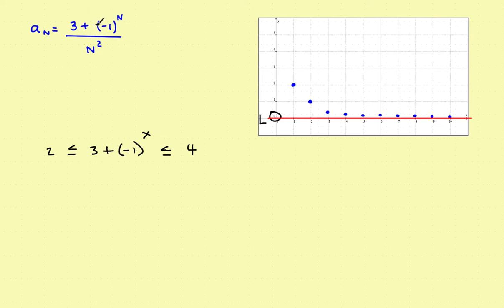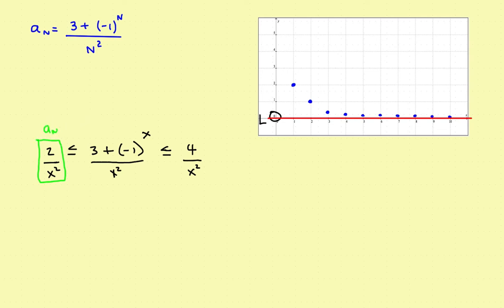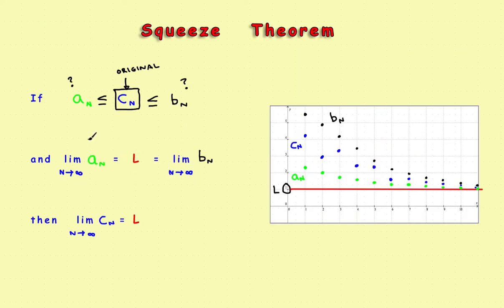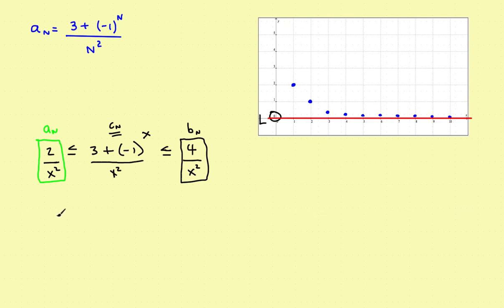The sequence has n² in the denominator. Since the numerator is between 2 and 4, dividing through by x² gives: 2/x² ≤ c_n ≤ 4/x². So a_n = 2/x² is the lower sequence, b_n = 4/x² is the upper sequence, and c_n is your original. Back to the three steps: show the limit of the lower sequence is L, then the upper, and conclude the limit of your sequence is also L.